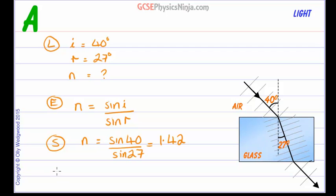Finally, we need to state the answer. The refractive index n of the glass is equal to 1.42. That number means that waves of light travel 1.42 times quicker in air or a vacuum than they do in glass.